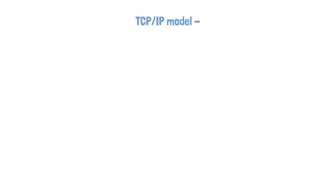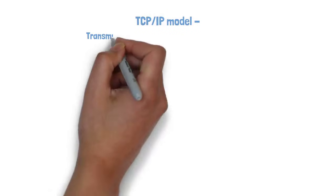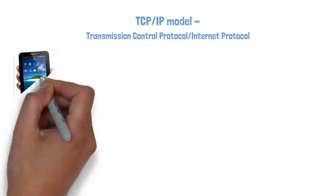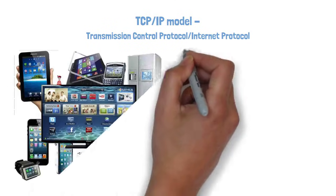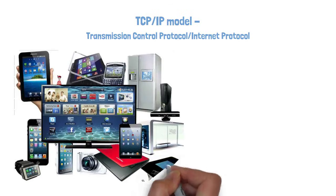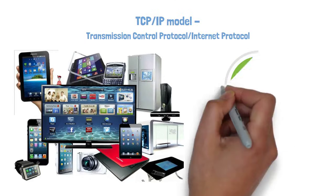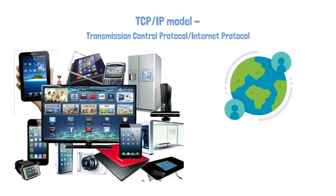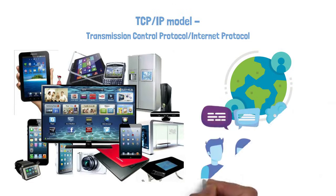First, what exactly is the TCP/IP model? It stands for Transmission Control Protocol, Internet Protocol — a universal playbook that all devices follow to talk to each other, no matter where they are or who made them. Think of it as the global language of the internet, allowing your phone, laptop, and even your smart fridge to communicate smoothly, just like people using a shared language on a group trip.